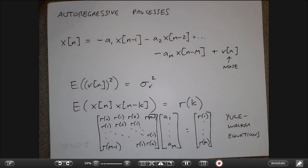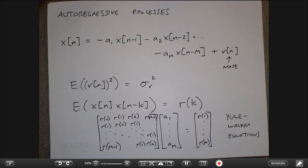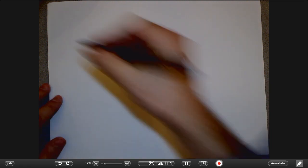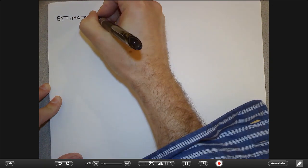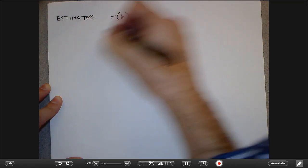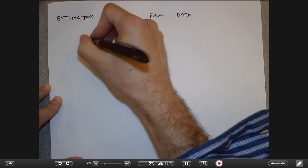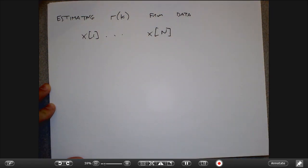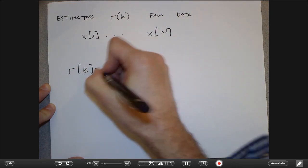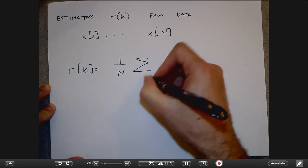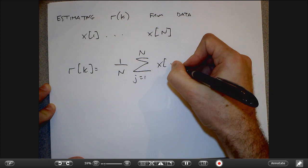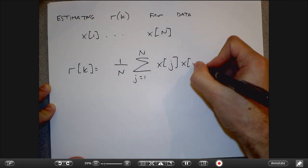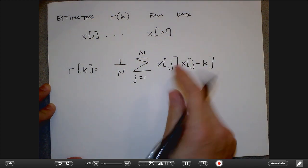When I know everything about the process in terms of a statistical representation, I can get those r's computationally. In practice, to estimate autocorrelations from data x1 through some large number, I would estimate the k-th autocorrelation by taking the average product of values separated by lag k. For example, to estimate r of 0, I look at the average sum of squares.